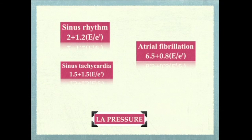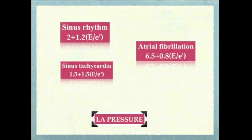We can also measure LA pressure in different cardiac rhythms. In sinus rhythm: LA pressure = 2 + (1.2 × E/A ratio). In sinus tachycardia with heart rate greater than 100: LA pressure = 1.5 + (1.5 × E/E'). In atrial fibrillation — where standard formulas break down, especially with severe MR or rapid ventricular response — these rhythm-specific formulas give a close estimate of LA pressure.